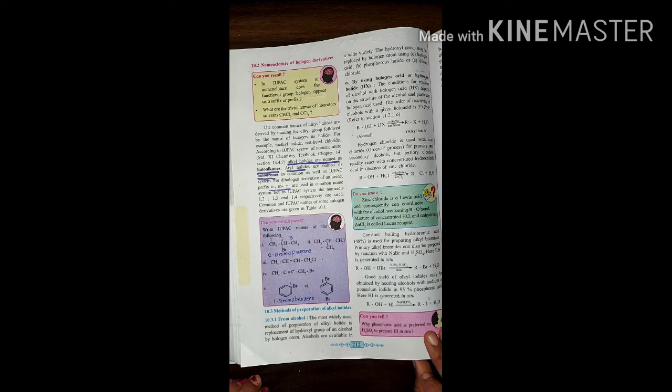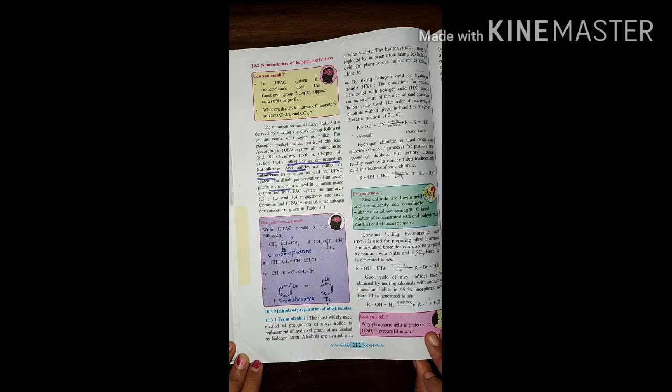More nomenclature examples with common names and IUPAC names are drawn in a table on the next page. Now, our next point is method of preparation of alkyl halides.